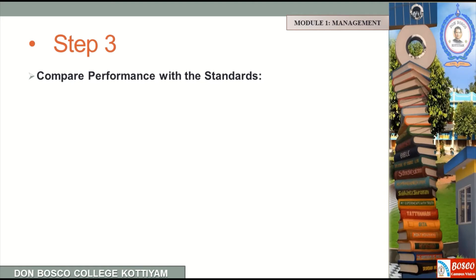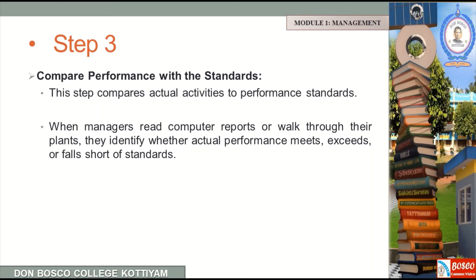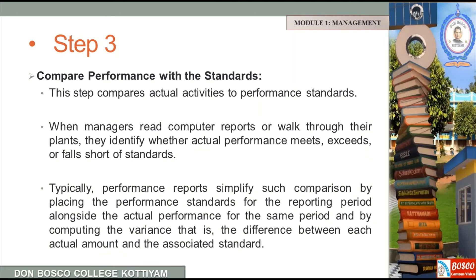The third step is to compare performance with the standards. This step compares actual activities to performance standards. When managers read computer reports or walk through their plans, they identify whether actual performance meets, exceeds, or falls short of the standard. Performance reports simplify such comparison by placing performance standards alongside actual performance for the same period, and by computing the variance — the difference between each actual amount and the associated standard.